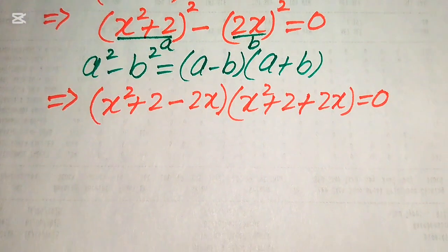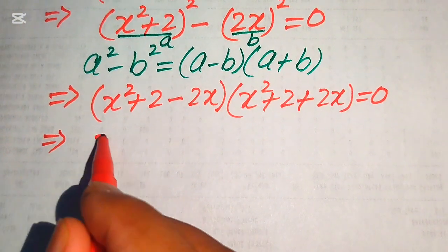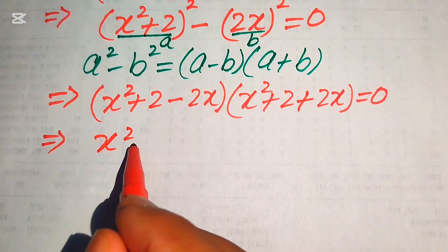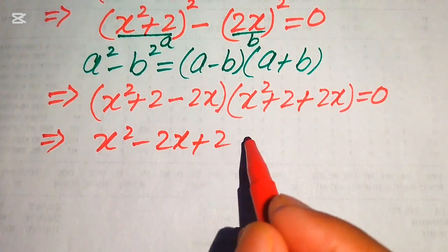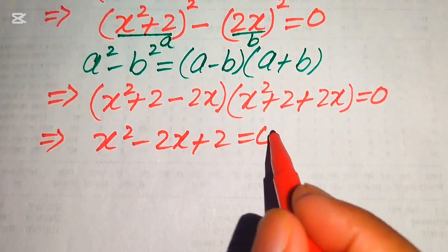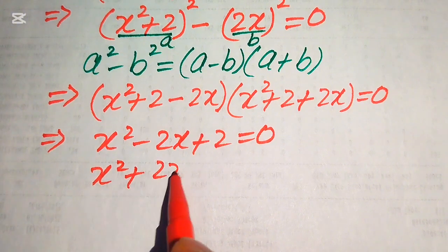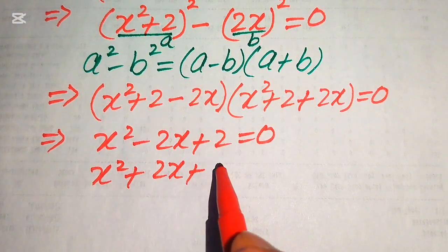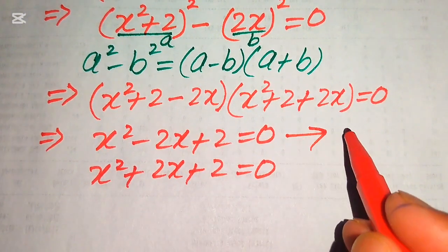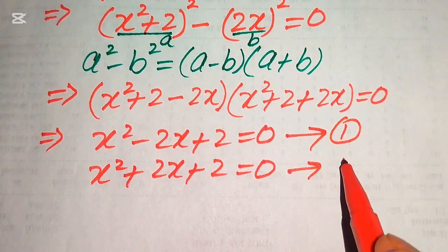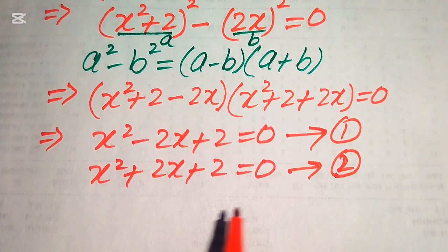We divide this equation into two cases. The first case is x² minus 2x plus 2 equals 0, and the second case is x² plus 2x plus 2 equals 0. We call these equation number 1 and equation number 2.